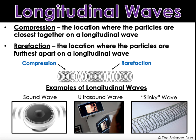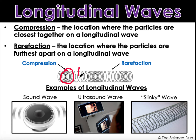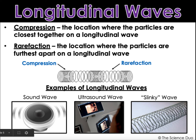A longitudinal wave, instead of having crests and troughs, has what's called compression — that's where the particles are really close together. And then it has rarefaction, which is when they start to spread out — that's where the particles are furthest apart. As a longitudinal wave is traveling, the particles are moving in the same direction as the medium. First they're scrunching close together and then they're spreading out, close together and spreading out, kind of inching their way along. Some examples of longitudinal waves are sound waves, ultrasound waves, and a slinky-type wave.